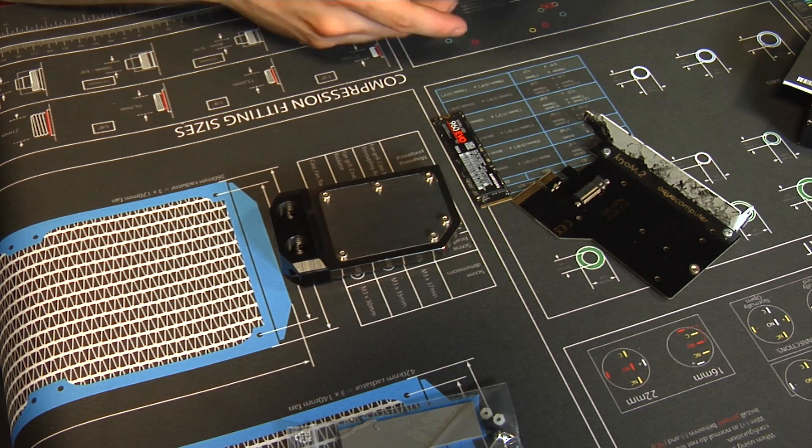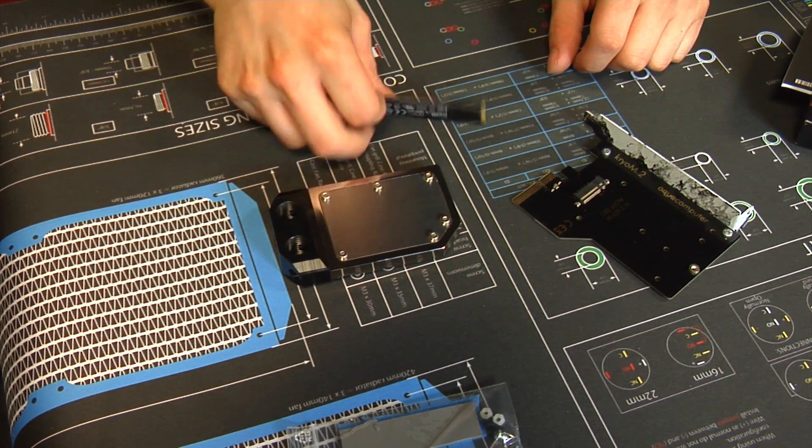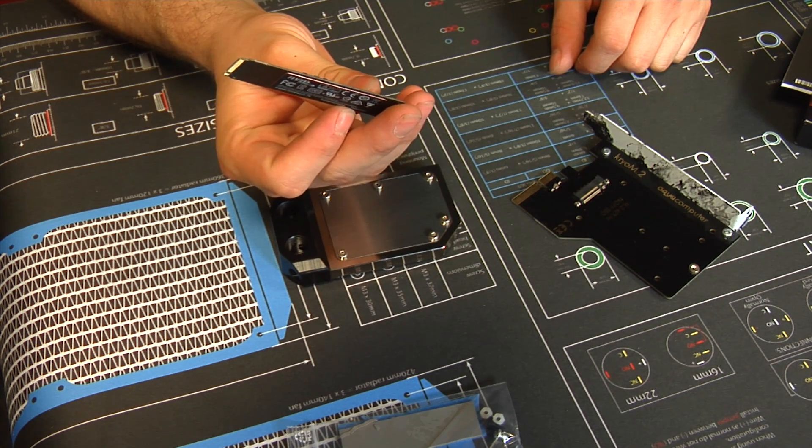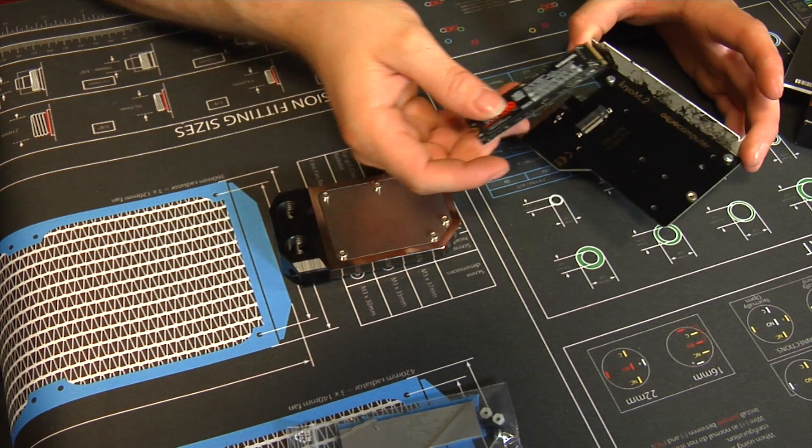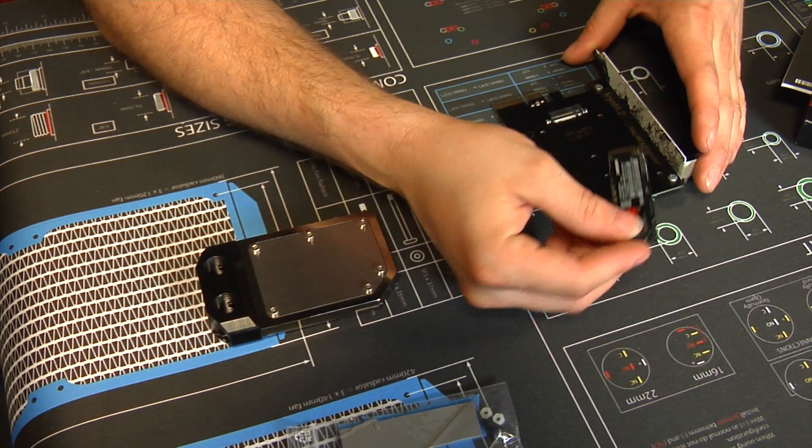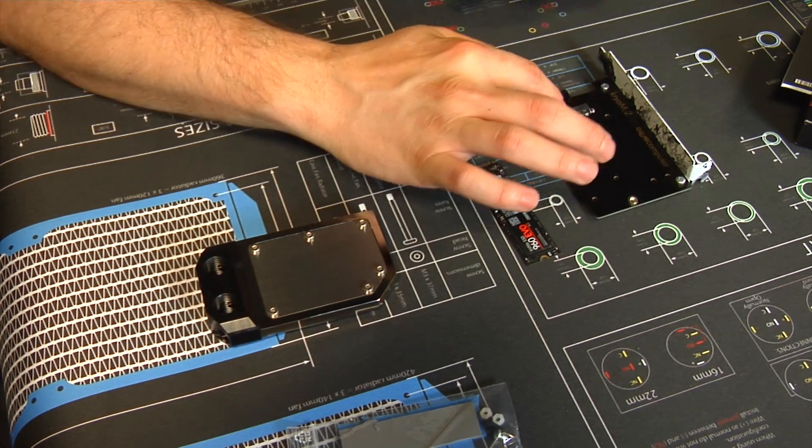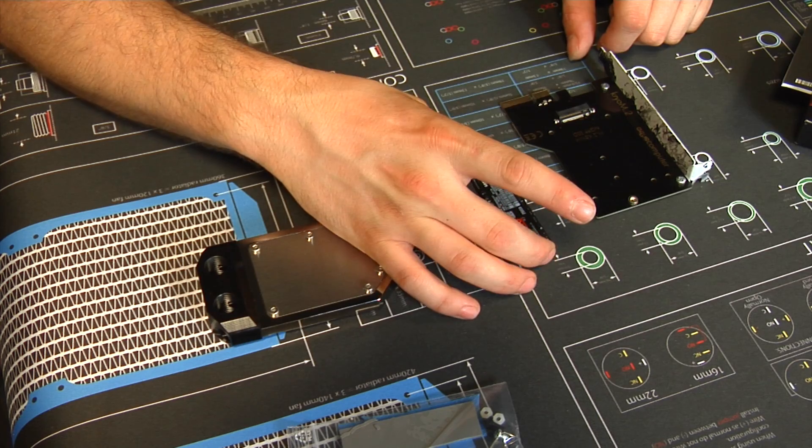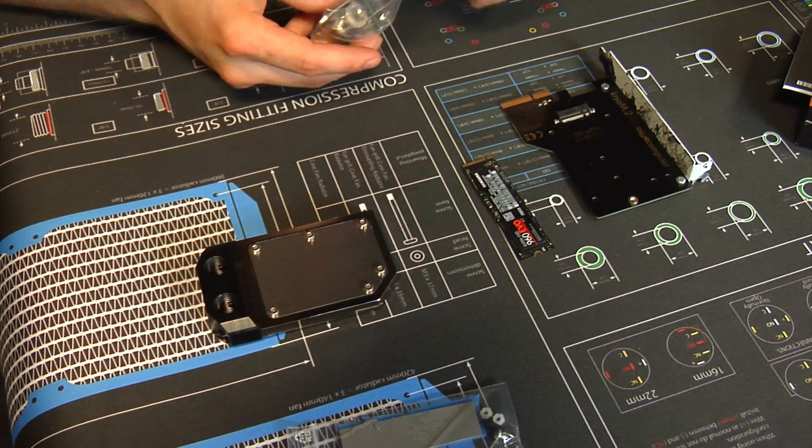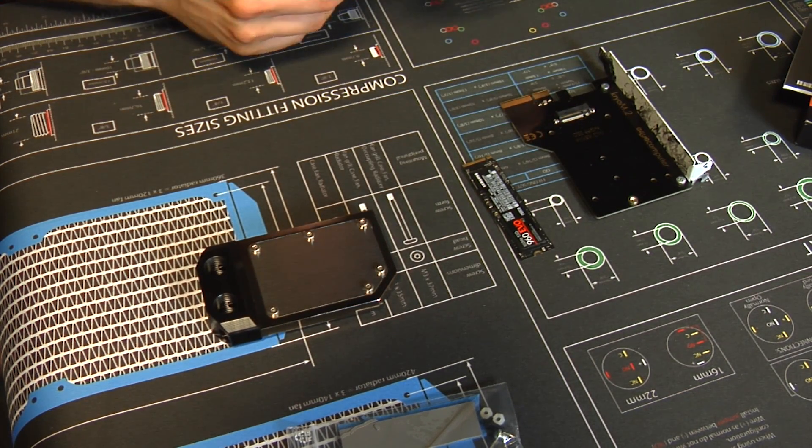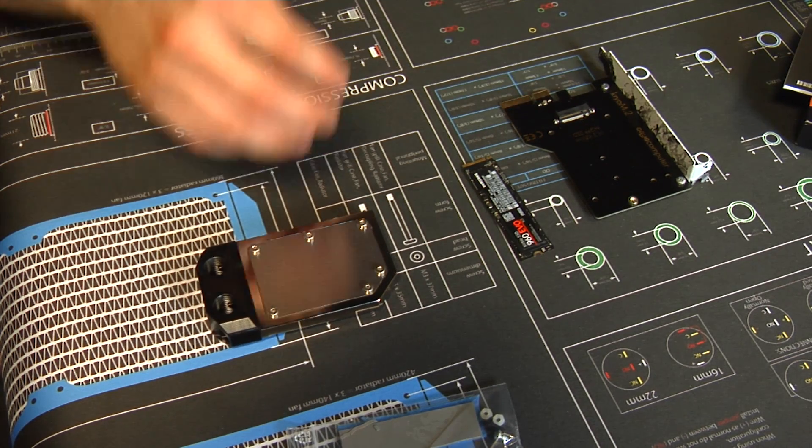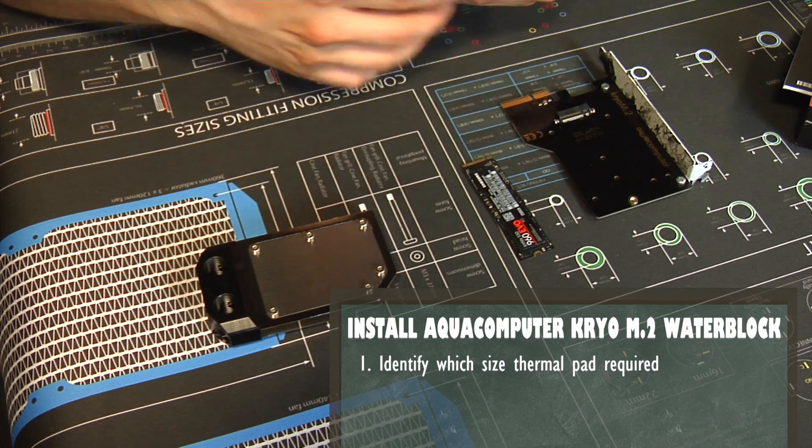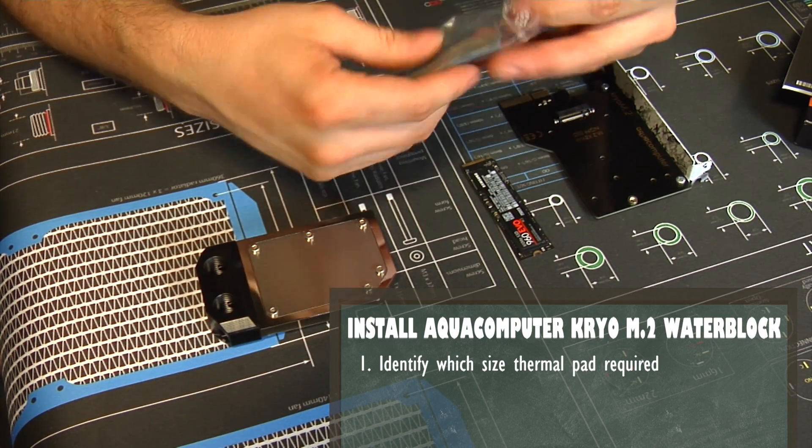There it is. Man, these are getting so small. That's ridiculous. Alright, so now what you do is you check the directions to see what size thermal pad you need for the bottom here. For most of the Aqua Computer stuff, it's 1.8 on the bottom, but you got to check the manual. It'll tell you what it actually is. So I'm going to use the thermal pad that came out of the box for that.